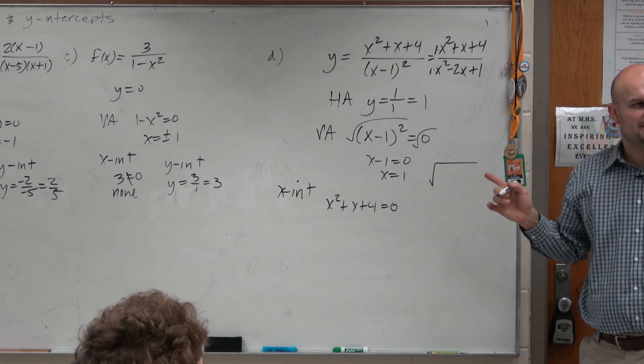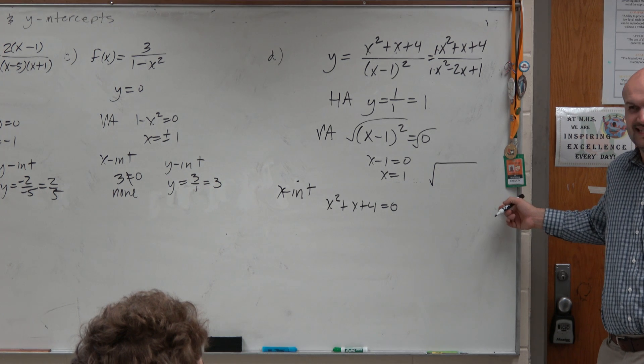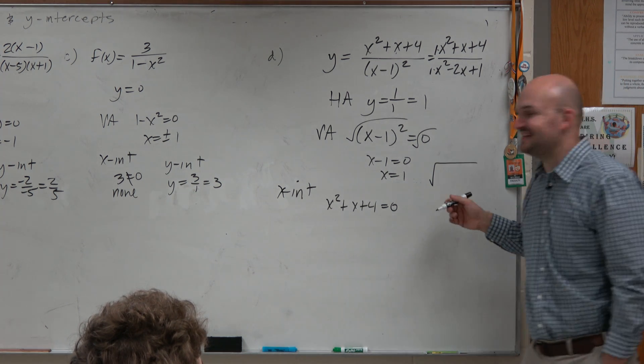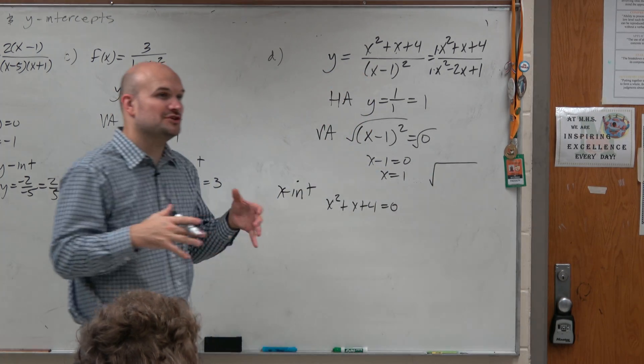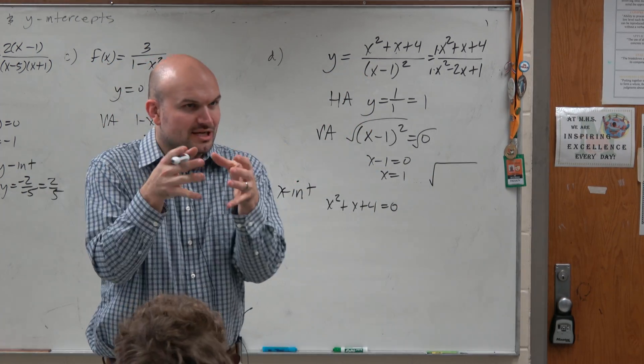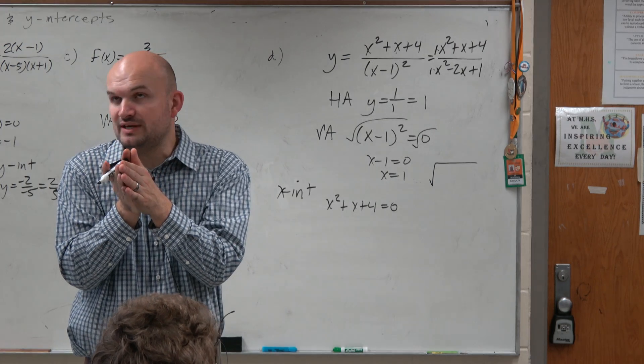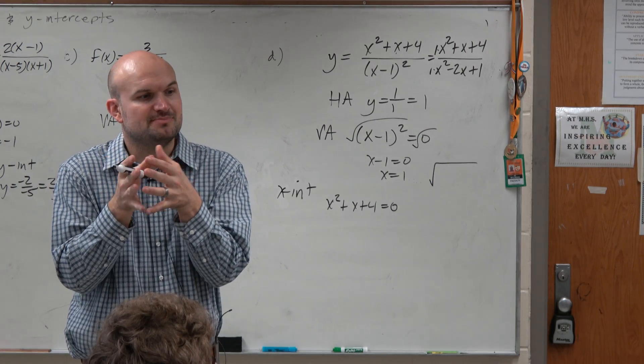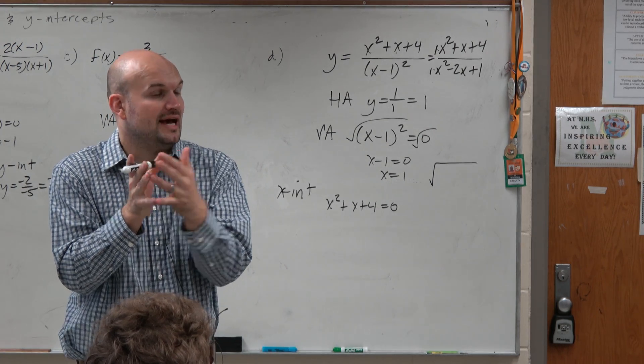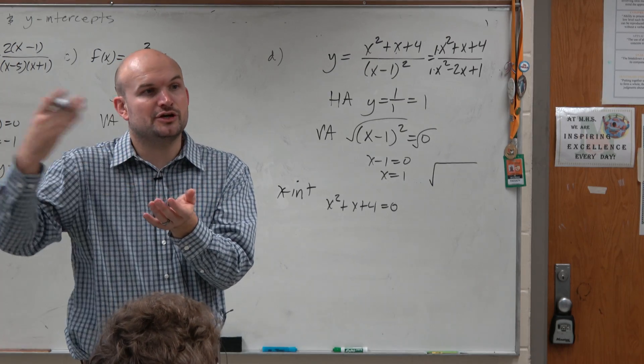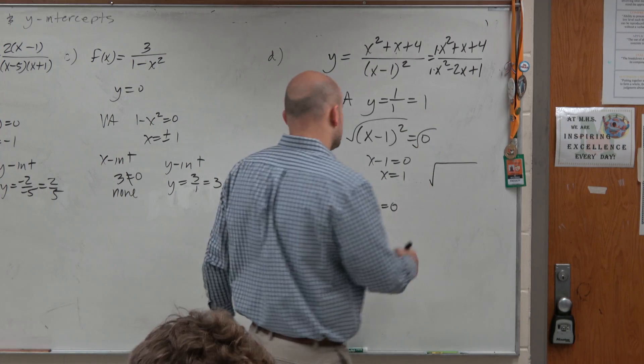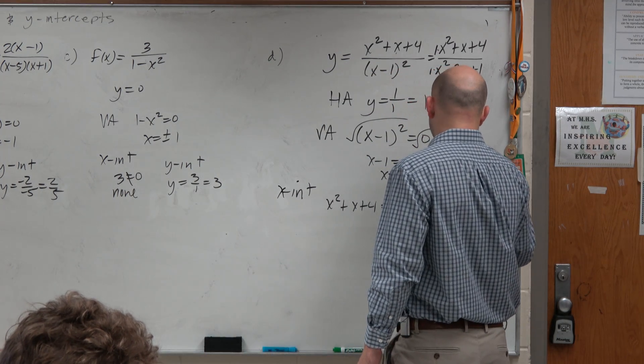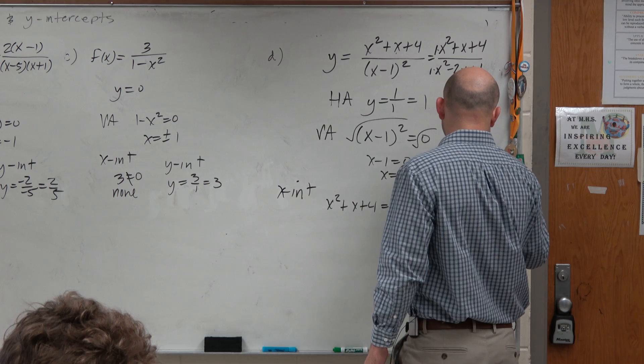It's called the discriminant. And basically, what you're doing is you're taking what's under the radical, basically testing the discriminant. And if the discriminant is negative, then you know you're going to have complex solutions, because you have a negative under the radical. So I'll just plug in 1² - 4 times 1 times 4.